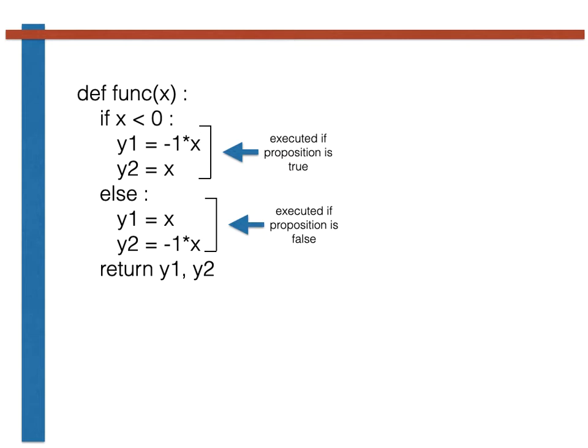The concept from formal logic that we are going to introduce in this video allows us to express how this code works in a different way. We are introducing the negation of a logical proposition, which is the proposition that is guaranteed to be true if the original proposition x is less than 0 in this code is false.